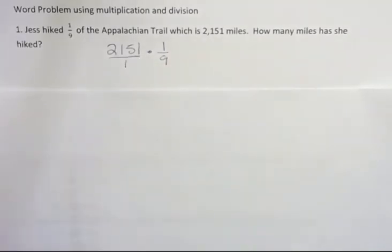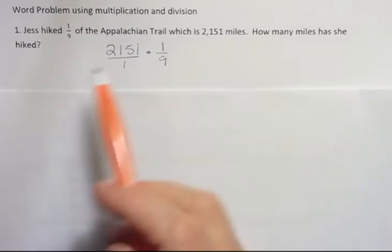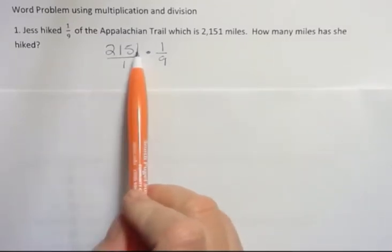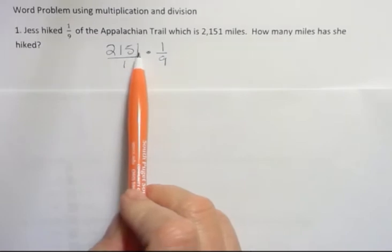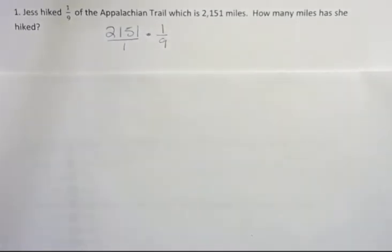And we can put a one under that to set that up correctly. Now, if it was me, I would probably check on a calculator to see if nine goes into 2,151. Or you could look at it this way. If you add up the digits, 2, 3, 8, 9 all together, that is a multiple of nine so we know nine is going to go into that number evenly.